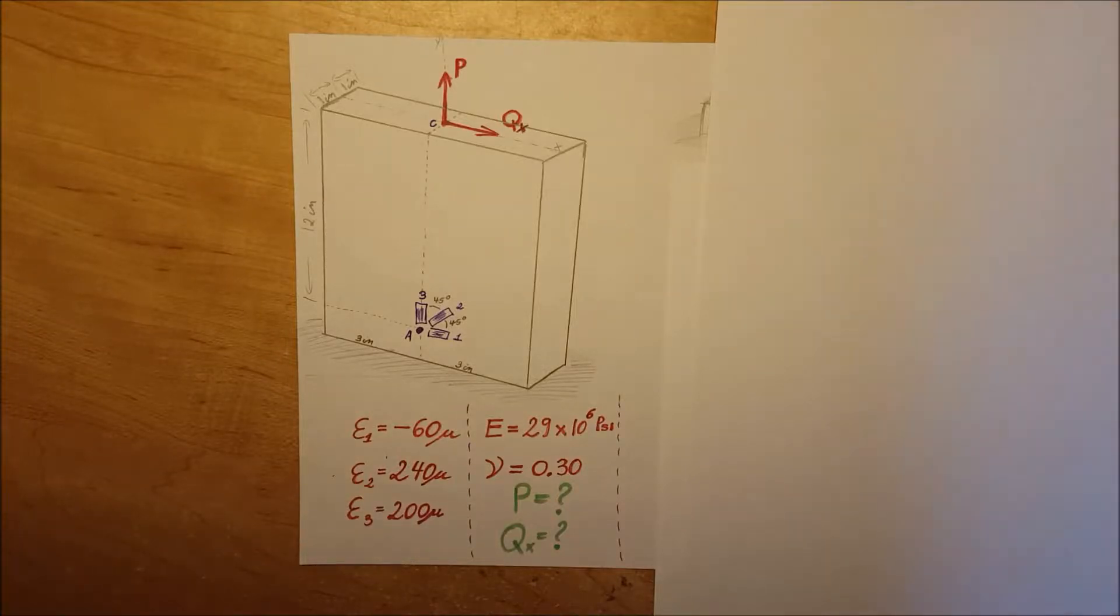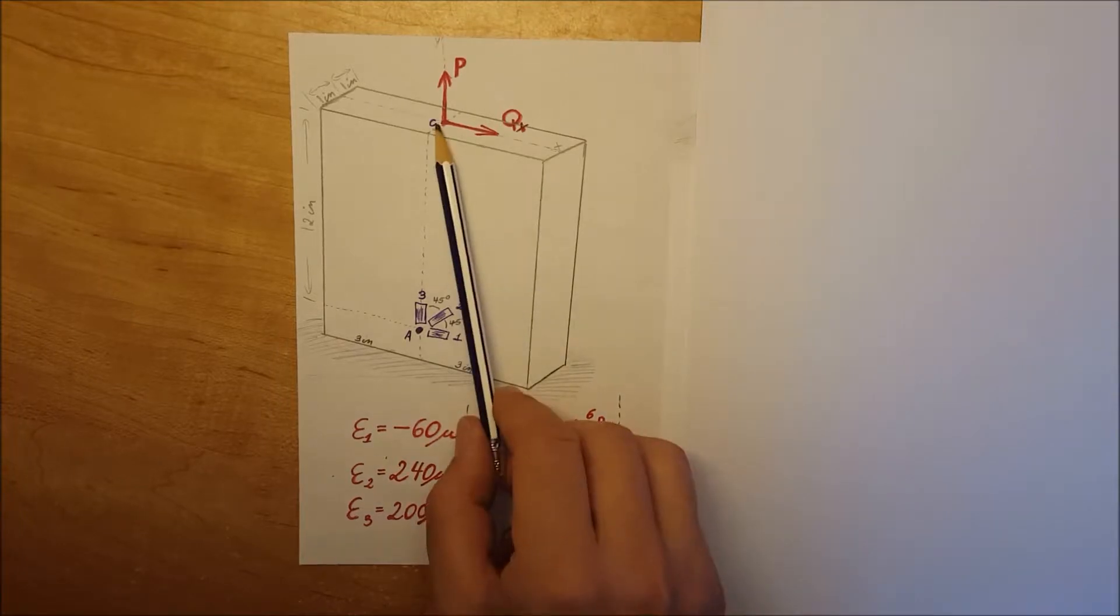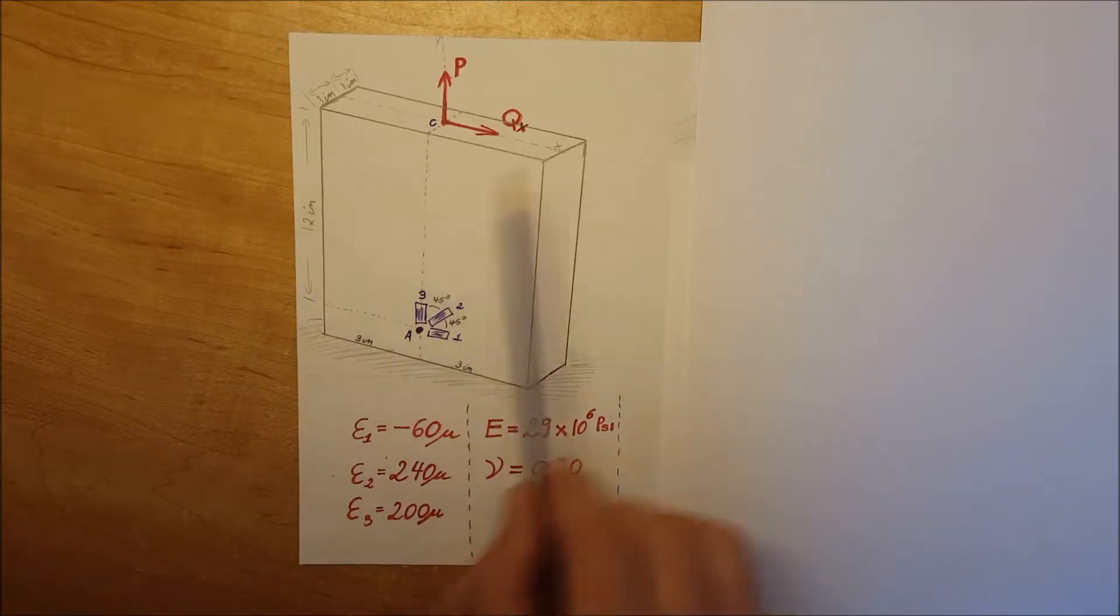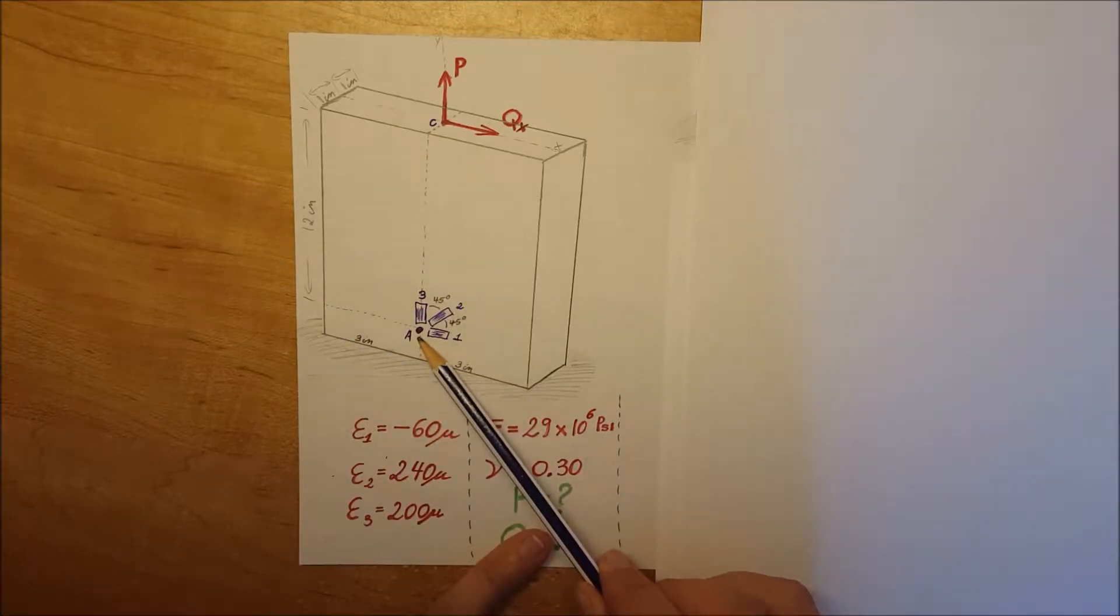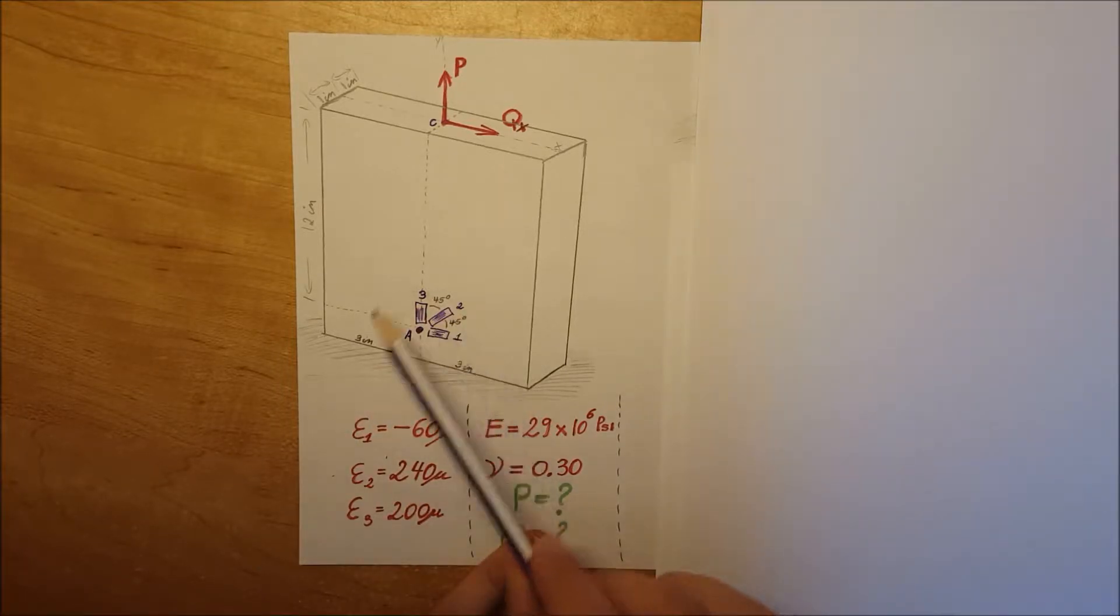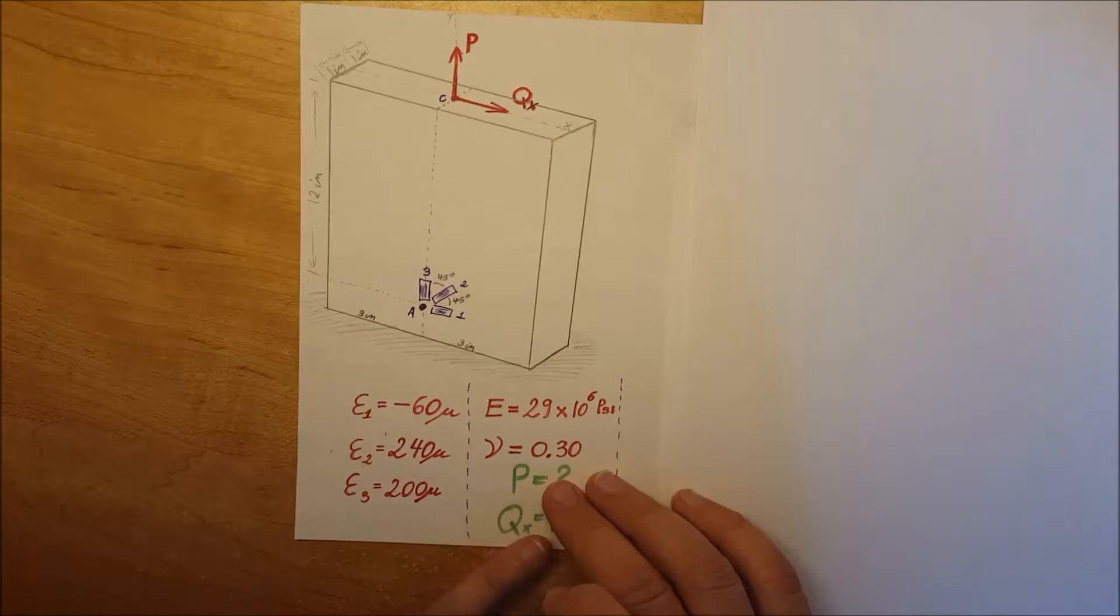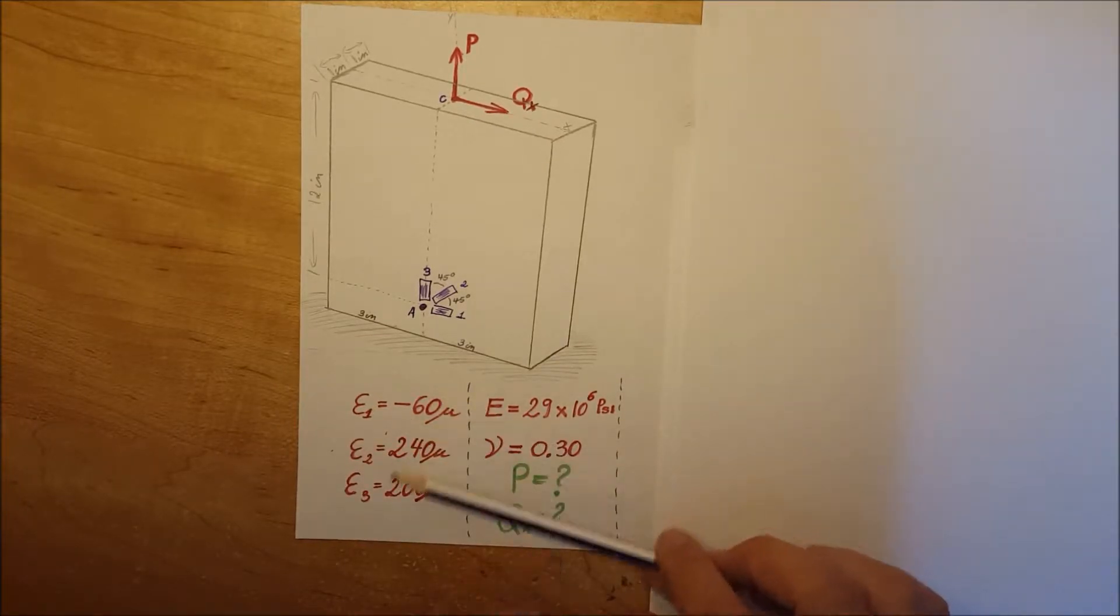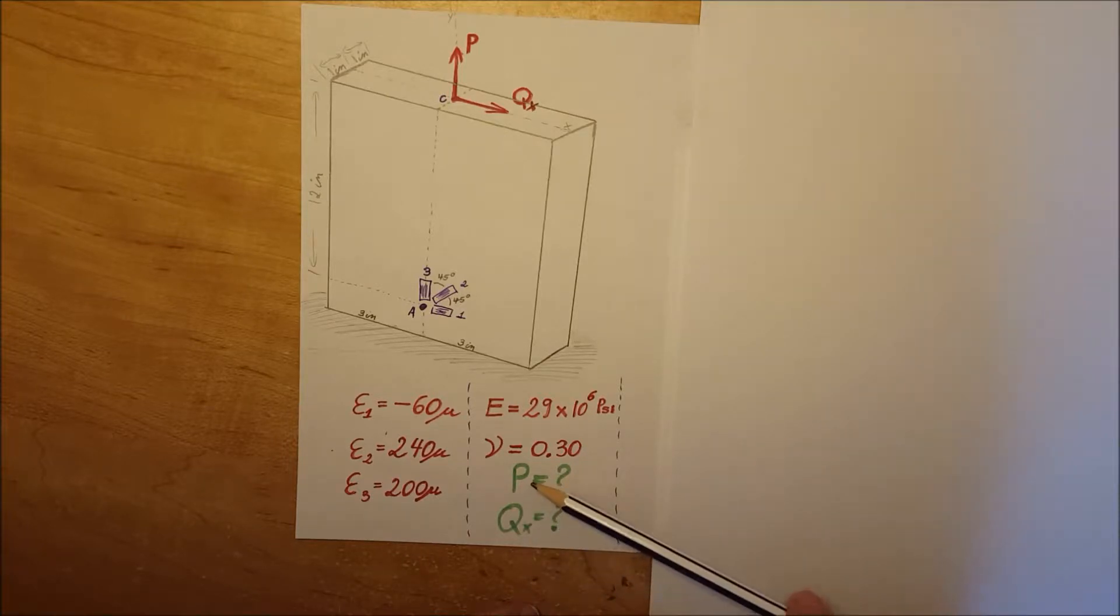This is a strength of materials problem where we have a rectangular bar with a centric axial force P and a horizontal force Qx applied at point C. At point A, we have a 45-degree strain rosette placed on its surface that gives us measurements ε₁, ε₂, and ε₃. We also know E and ν from Poisson's ratio.